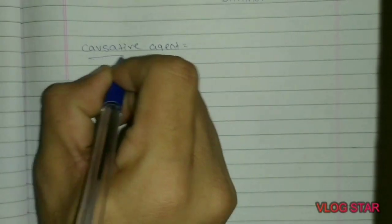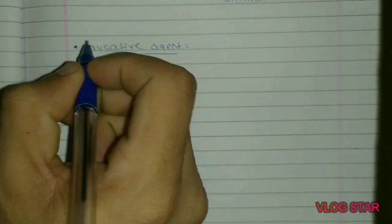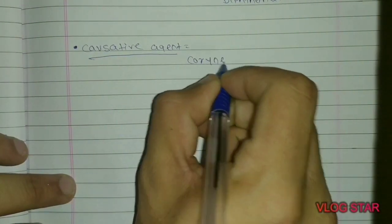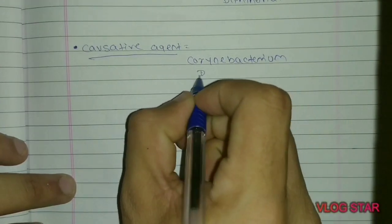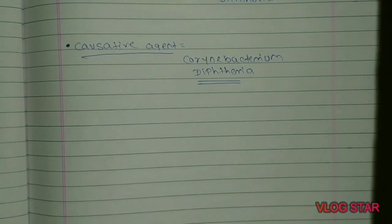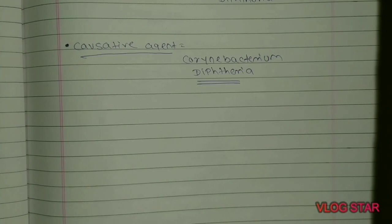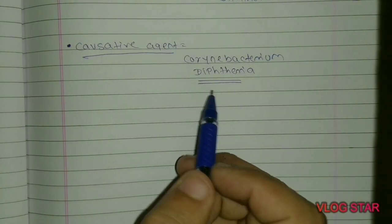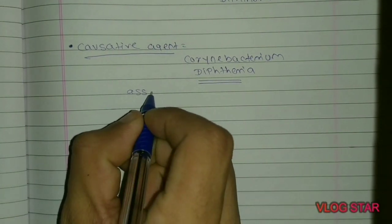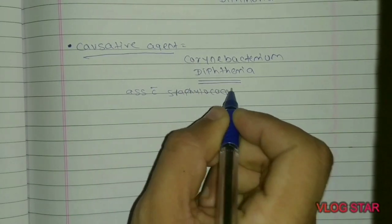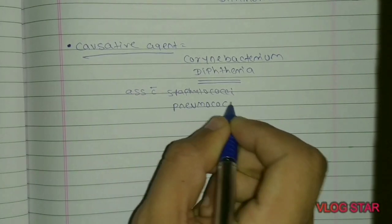Causative agent: In the majority of cases, Membranous Conjunctivitis occurs due to infection by Corynebacterium diphtheriae. This Corynebacterium diphtheriae is usually responsible for the formation of Membranous Conjunctivitis, and it is always present in association with Staphylococci and Neisseria.